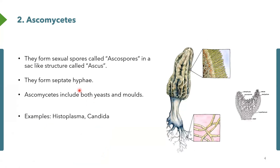The next class is ascomycetes, and it's called that because it has a sac-like structure called asci. These asci are basically the ones that harbor the spores, and the spores found in these sac-like structures are called ascospores. The hyphae of ascomycetes are actually septate. Ascomycetes are named because they have ascospores found inside a sac-like structure called asci.